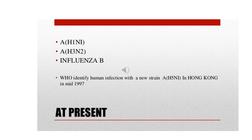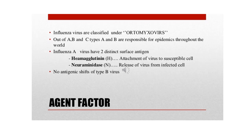WHO identified human infection with a new strain, H5N1, in Hong Kong in mid-1997. Influenza viruses are classified under orthomyxovirus. A and B are responsible for epidemics. There are distinct features: H and N antigens. There is no antigenic cross-immunity between the types.